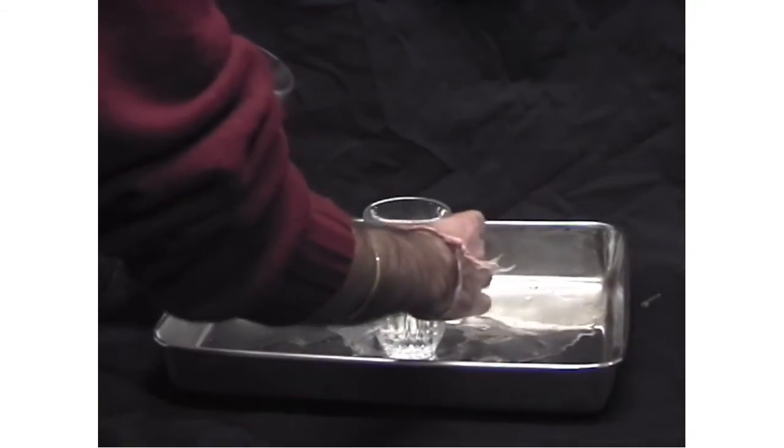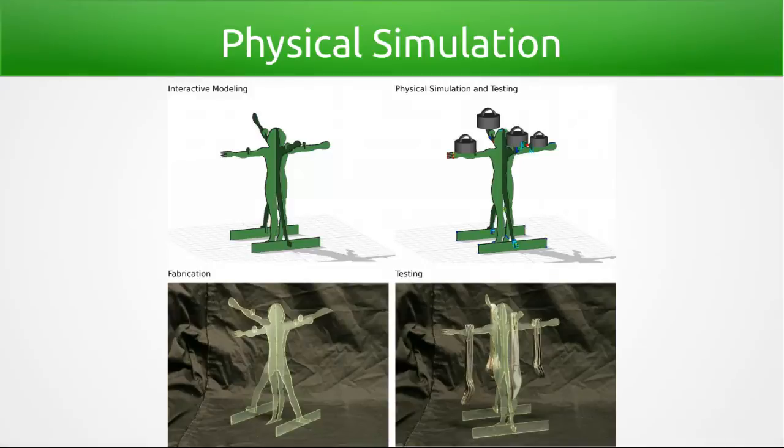Using a reference image of the Vitruvian man as our design collateral, we also created the Da Vinci inspired cutlery holder. The cutlery was weighed and we interactively added these weights to our digital model. As predicted, the physical creation supported the weight of the cutlery.